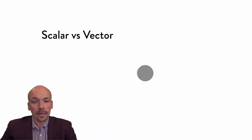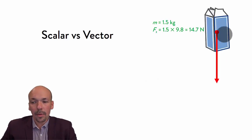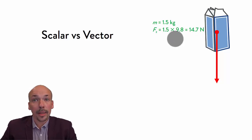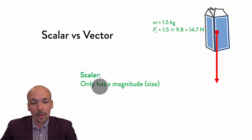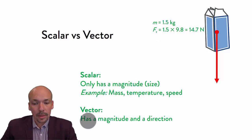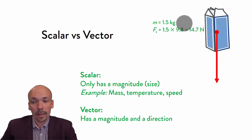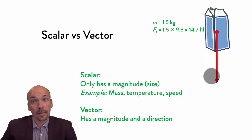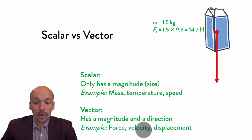I will briefly explain something about scalars and vectors, because these terms are used a lot. If we look at this example, we have the mass and we have the gravitational force. One of them is a scalar and the other is a vector. A scalar has only a magnitude or size — like mass, temperature, or speed. The direction is not determined by the mass itself. A vector has not only a magnitude but also a direction, shown by the arrow. The arrow can go down, left, right, or up — it can go everywhere. In the case of gravitational force, it goes down. Other examples of vectors include force, velocity, and displacement.